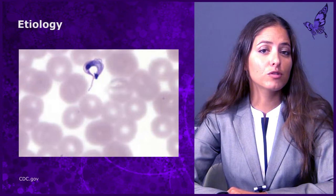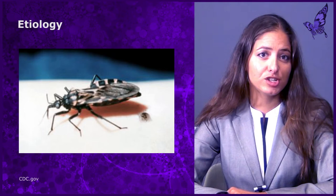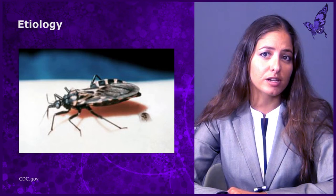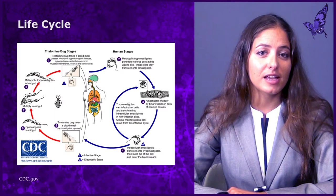Trypanosoma cruzi is a protozoan parasite that is most commonly transmitted by its insect vector, the Reduviidae, or "kissing bug." Other modes of transmission include vertical and iatrogenic via organ transplant or transfusion with infected blood products. Vertical transmission is estimated to occur in 1–12% of infected pregnant women in Latin America. The life cycle of Trypanosoma cruzi is summarized here.